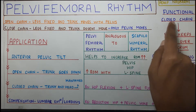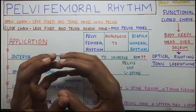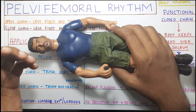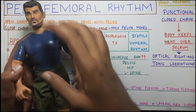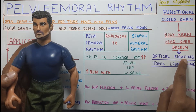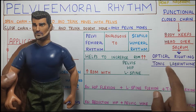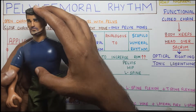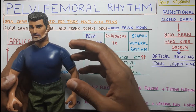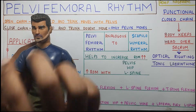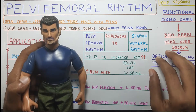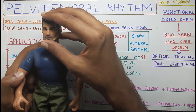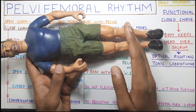This is where the concept of functional closed chain comes into play. The legs are fixed structurally, but the other end - your head - is fixed functionally. The body keeps the head over the sacrum using optical righting reflex and tonic labyrinthine reflex. The optical righting reflex is a visual reflex and the tonic labyrinthine reflex is a primitive reflex. They help your body maintain the head in the right position, right above the sacrum, with both eyes at the same level. So the head is fixed functionally, not structurally - nothing is pressing on top of your head, but it is fixed functionally.